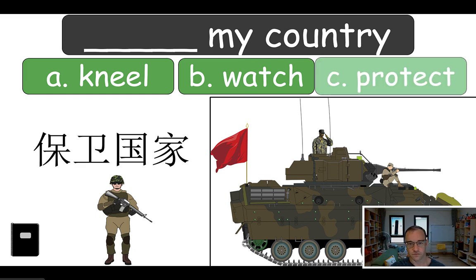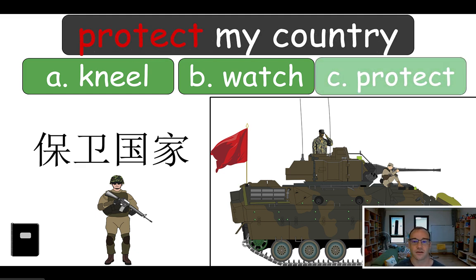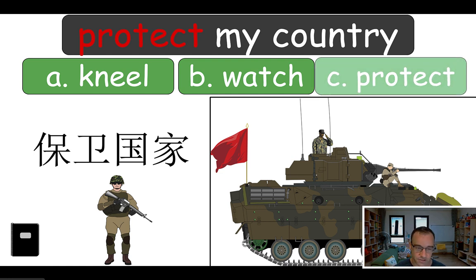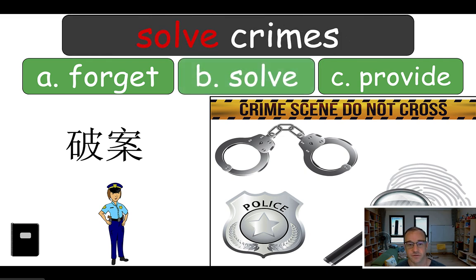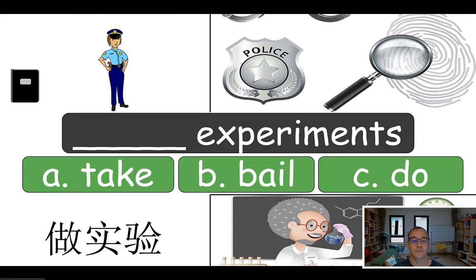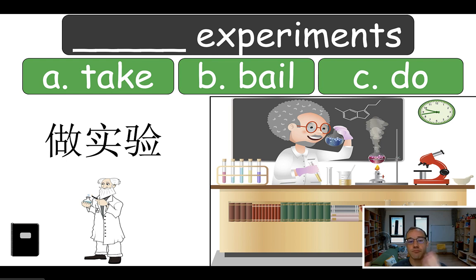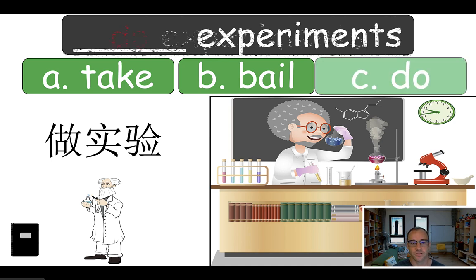Presenting stuff they potentially don't know alongside stuff you think they do know — put it together in one lesson so they can feel confident and you're not presenting too much new material, which could be overwhelming. Next one: 'Is it forget crimes, solve crimes, or provide crimes?' Same drill — call one student from each team and then present the answer. This should be 'solve crimes.' Have them write it down. Next: 'Is it take experiments, bail experiments, or do experiments?' Same drill, then present the answer: 'do experiments.'